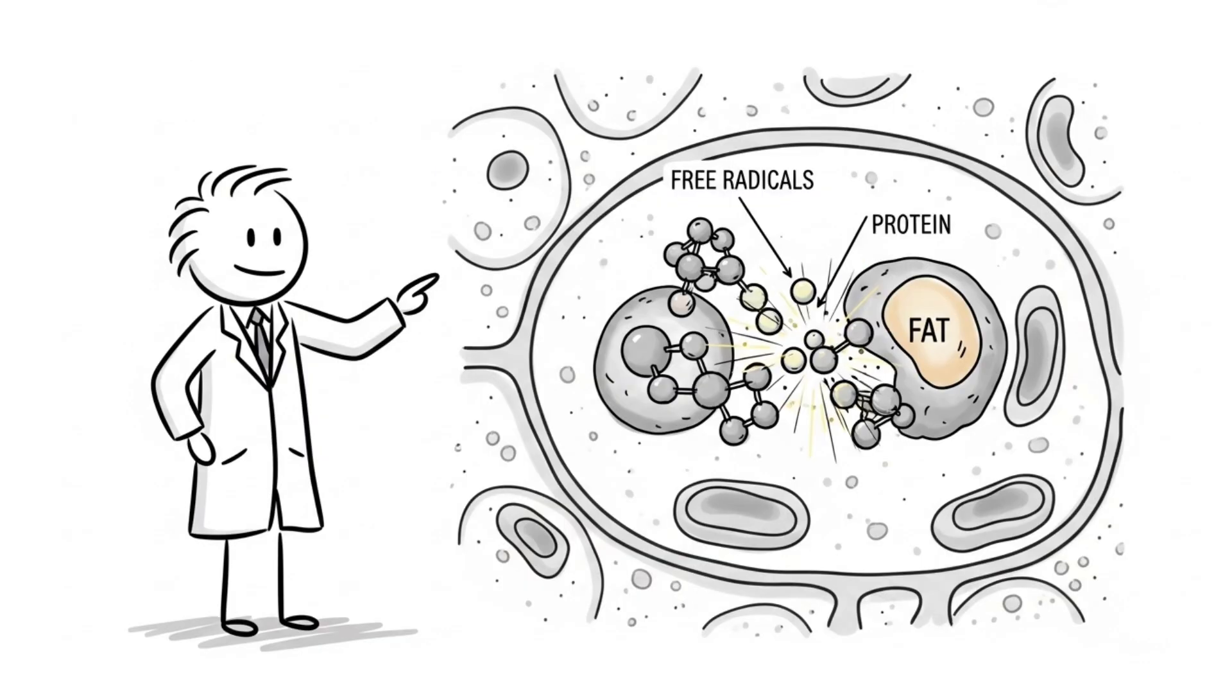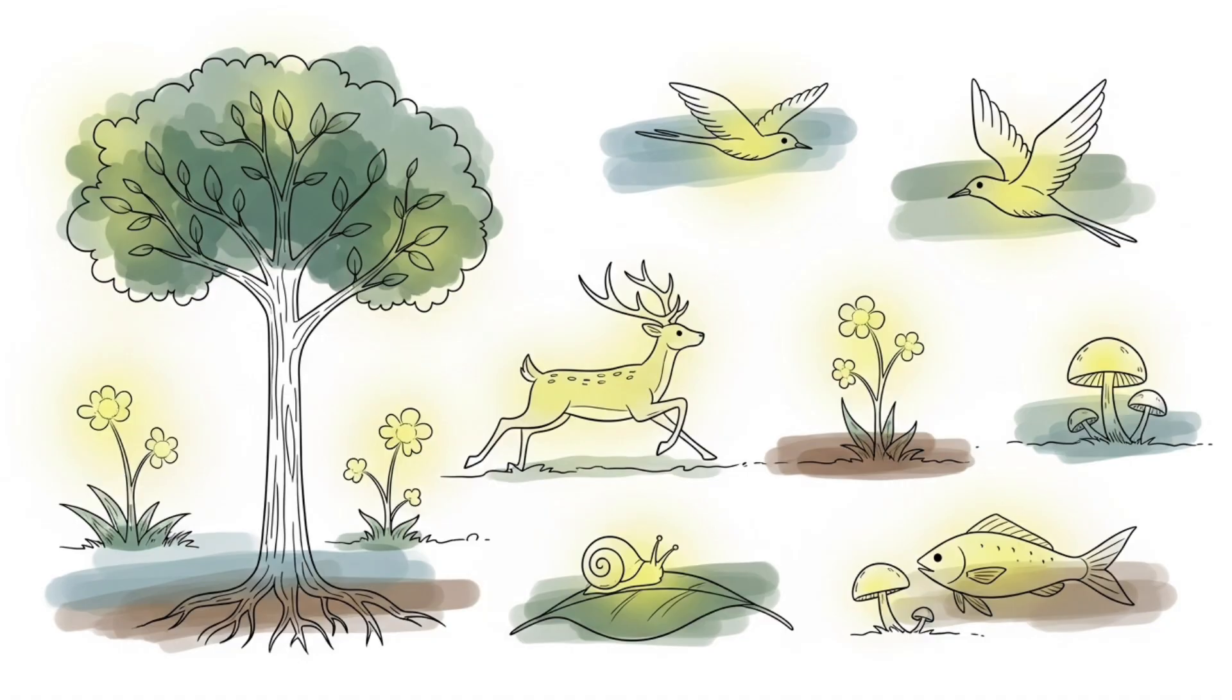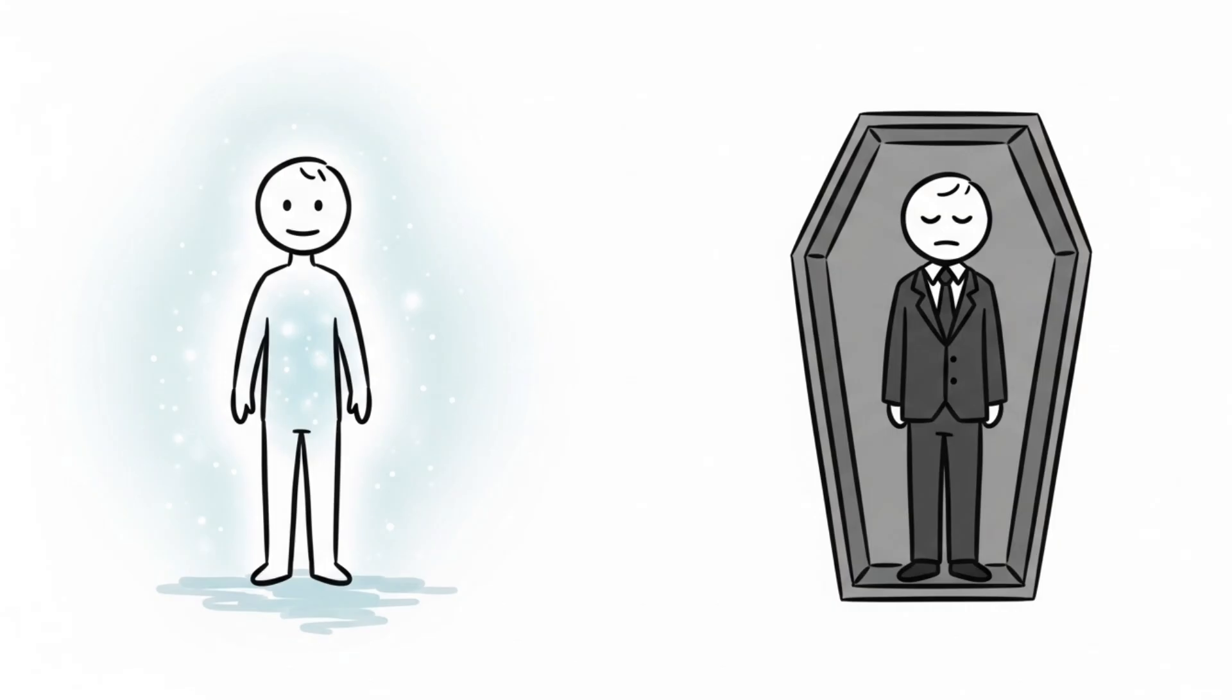As free radicals react with fats and proteins in your cells, they sometimes release light. So really, all living organisms have this faint light glow. And it's another way for us to verify someone is truly dead when this light completely fades.